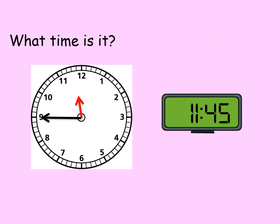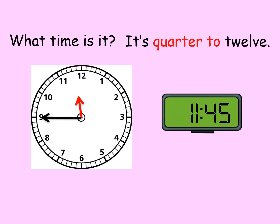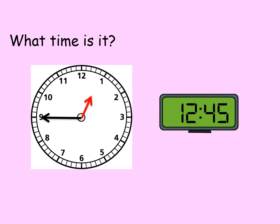How about this? What time is it? Can you tell, boys and girls? That's right — it's quarter to 12. How about this one? What time is it? The short hand is going to 1 o'clock but not yet — 15 minutes later. That's right — it's quarter to 1.